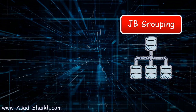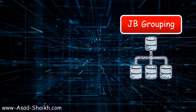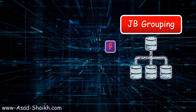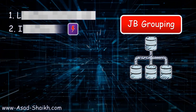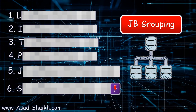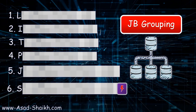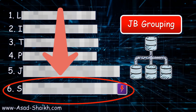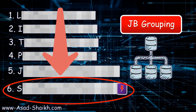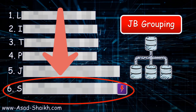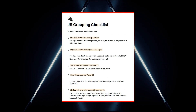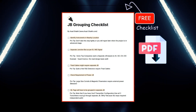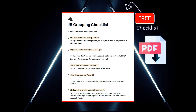In this video we are going to learn about junction box grouping. There are six important rules that if you follow, junction box grouping will become very easy. Rule number six is something which a lot of engineers and designers make mistakes on, but after watching the video this will become very clear. At the end we'll also see a JB grouping checklist which is available to download in the video description.